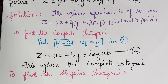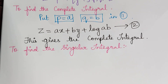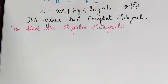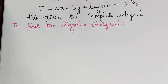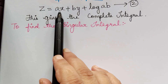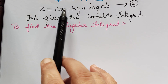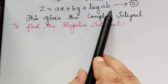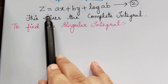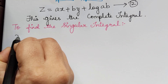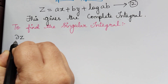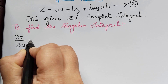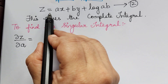The next step is to find the singular integral. In order to find the singular integral, we have to eliminate the arbitrary constants a and b from Equation 2, for which we first have to partially differentiate z with respect to a.